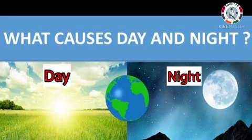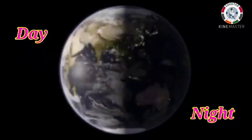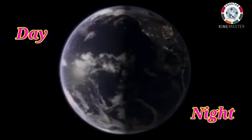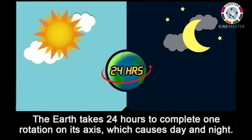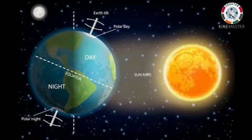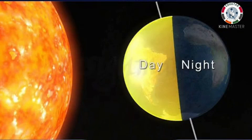Do you know how we get day and night? The rotation of the Earth causes day and night. One complete rotation of the Earth on its axis causes one day and one night. The Earth completes one rotation in 24 hours. Thus, a cycle of one day and one night is repeated after every 24 hours. When the Earth rotates, one half facing the Sun gets light — it is daytime on this half. The other half does not get any light — it is night time on that half. Since Earth is rotating constantly, we see continuous cycles of day and night.